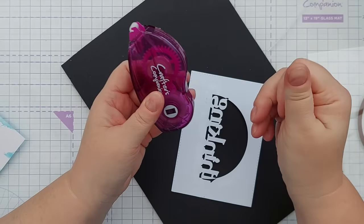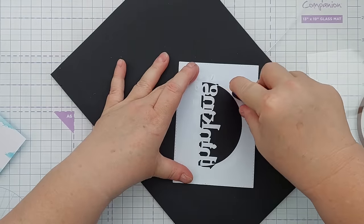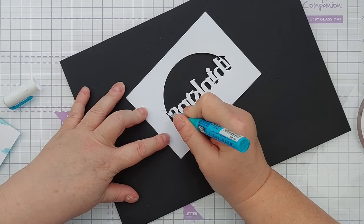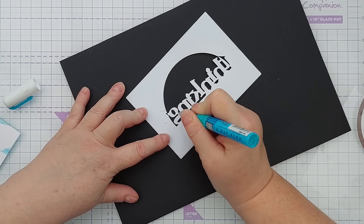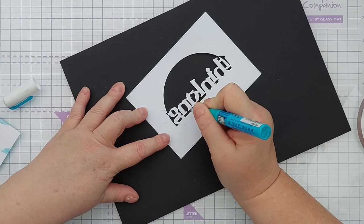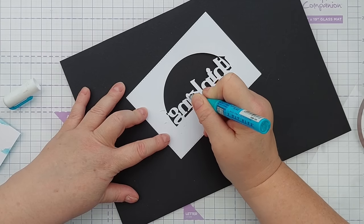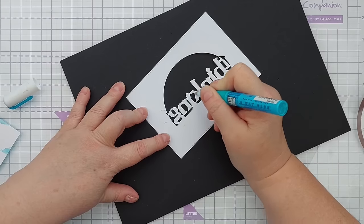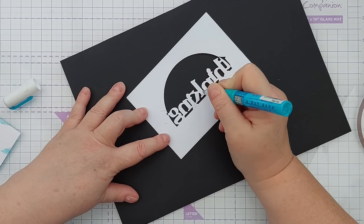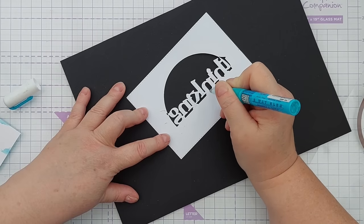To help stick the letters down I'm going to put some zig two-way glue on the back. This dries tacky so once it's gone clear I'll put the acetate over the back and it should stick the letters in place onto the acetate so they don't flap around.